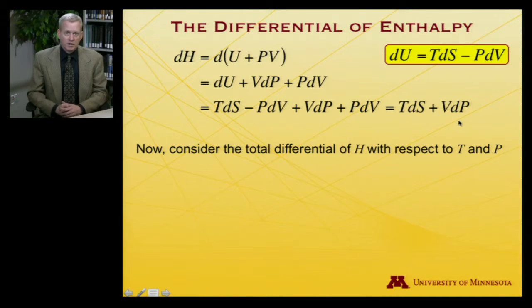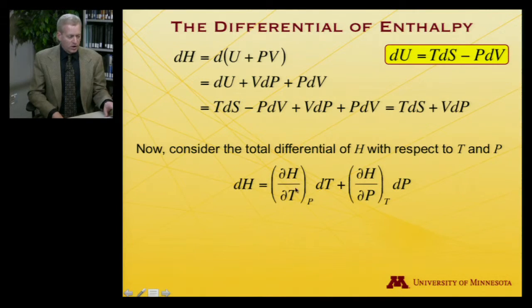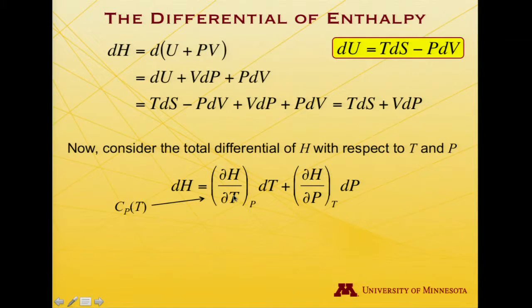And once more, I can play the game of looking at the total differential and equating common factors multiplying differentials. So if I take the total differential of the enthalpy with respect to temperature and pressure, it's the partial derivative with respect to T and with respect to P, multiplying their respective differentials. Again, this first term is one we've seen before. That's the constant pressure heat capacity.